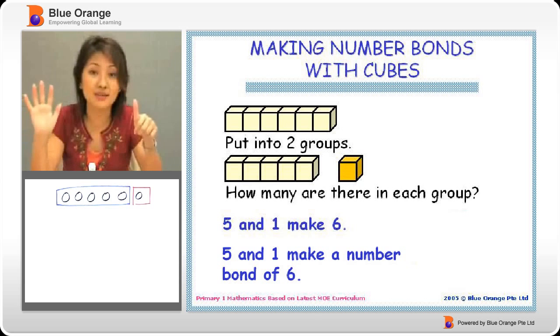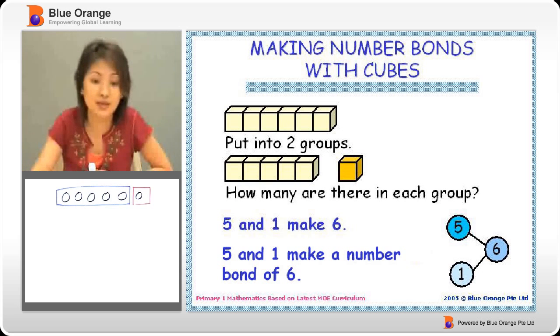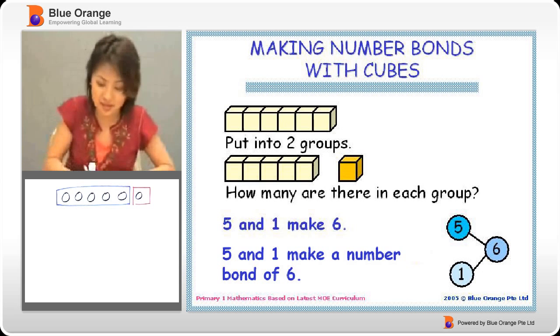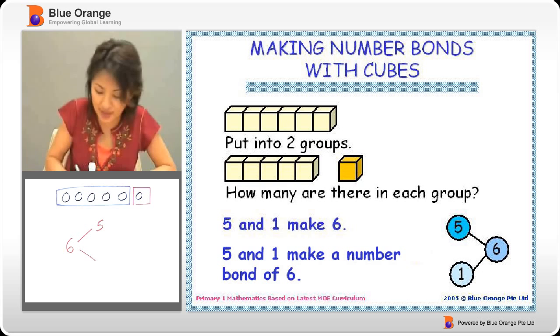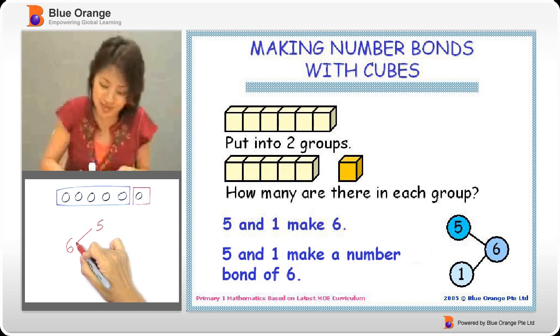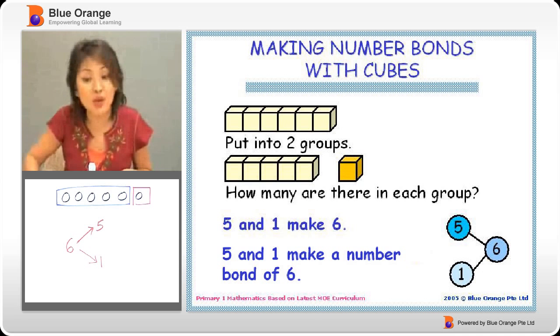So, five, one, they are number bonds of six. So, we can write it in this manner like that. Six is made of five and one. Six can be split into two. This is like split into five and one.